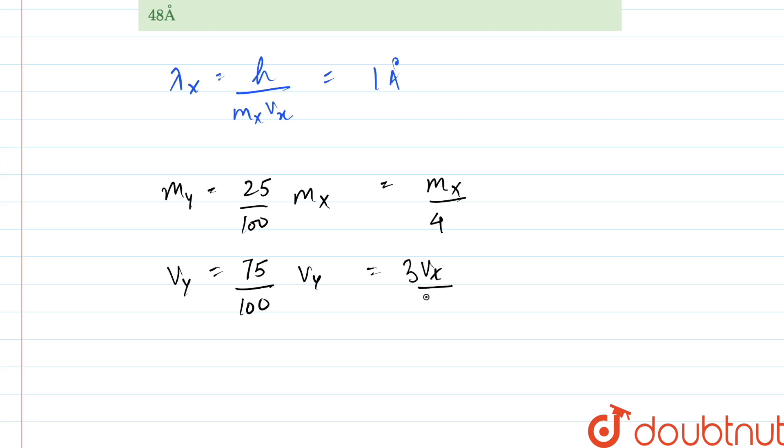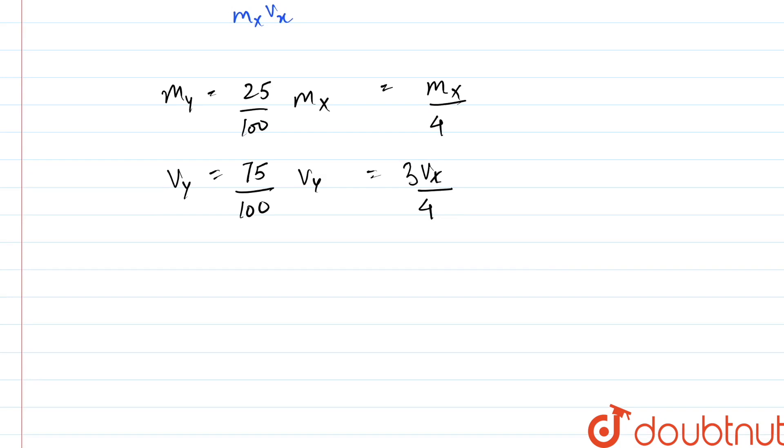So now if we have to find out the de Broglie wavelength for Y, then lambda_Y would be h/(m_Y × v_Y), that is h/((m_X/4) × (3v_X/4)).